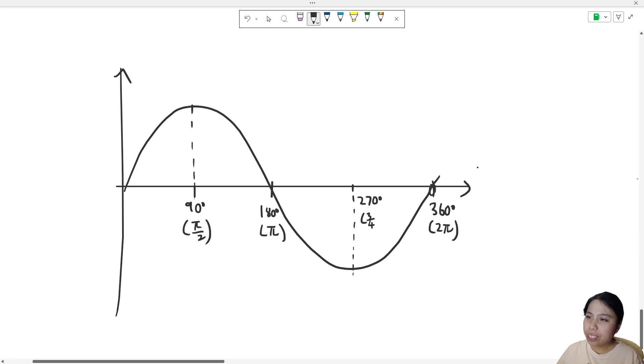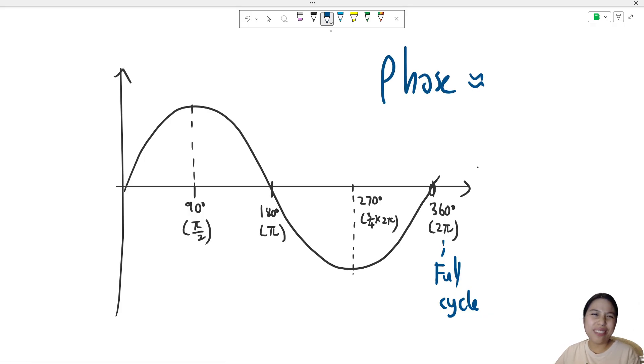Which is three quarters of the whole wave - sorry, if whole wave is 2π, I just realized 3π over 4 times 2π. Okay, so this is what we call full cycle at 360. Think of phase as like the angle that keeps repeating in a way.